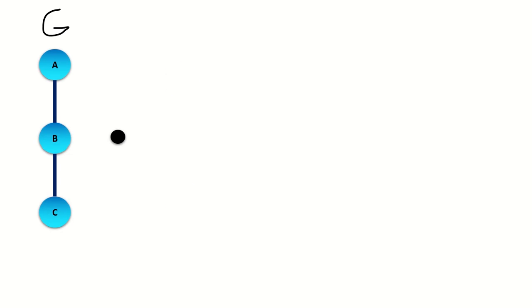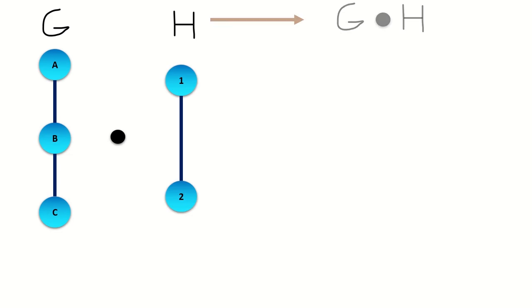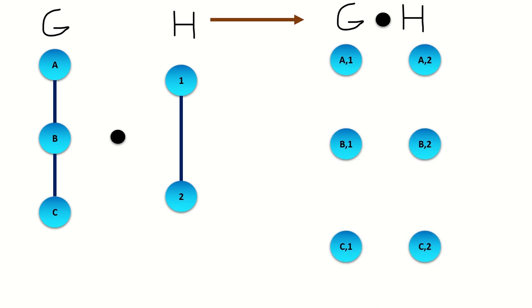The lexicographic product of graphs is a graph operation that takes as its input two undirected simple graphs, g and h, and outputs a new undirected simple graph with vertex set equal to the cartesian product of the vertex sets of g and h. That is, every vertex in the lexicographic product corresponds to an ordered pair of vertices from g and h, where the left entries in the pairs are vertices from graph g, and the right entries are vertices from graph h.